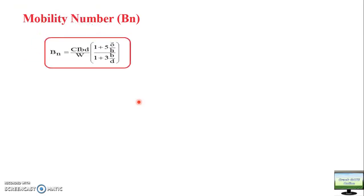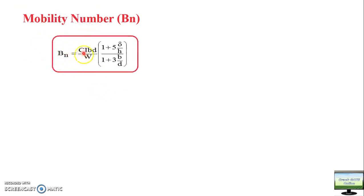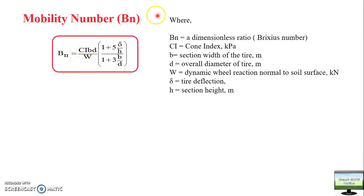The second concept is the mobility number (BN). If the mobility number is high, it means your tractor or tire will be able to move forward easily. If it is low, resistance is high and it is difficult to move. It is a dimensionless number.